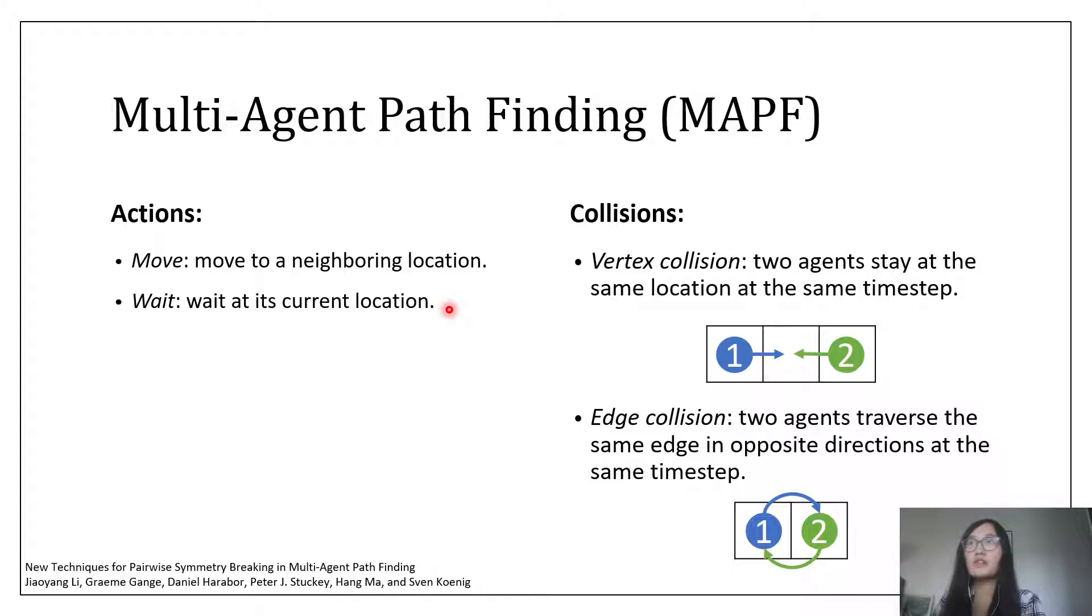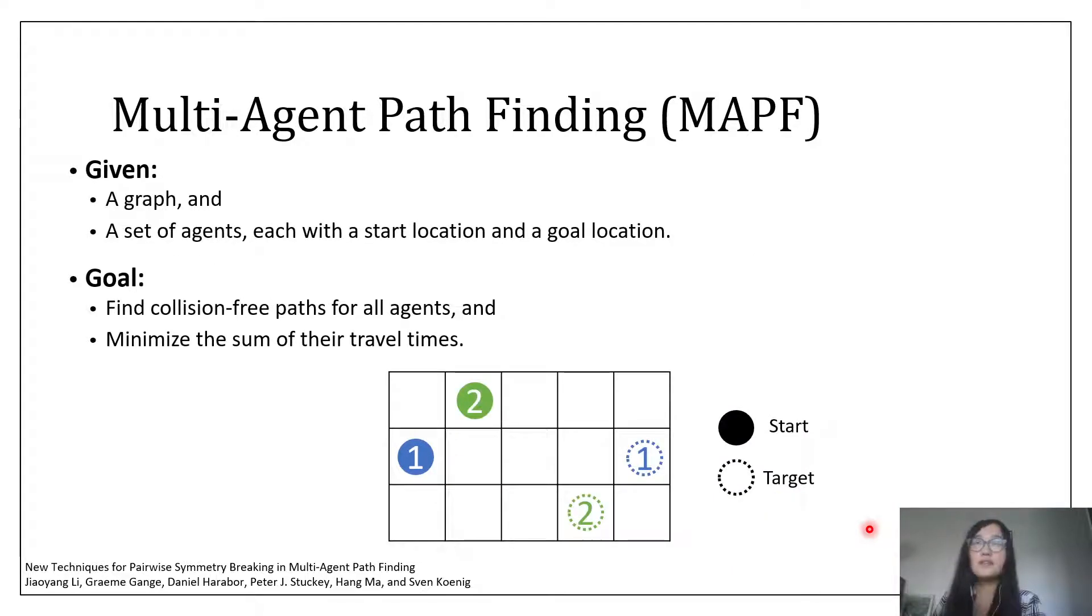We assume there are two types of collisions. The first is vertex collision, which happens when two agents stay at the same location at the same time step. The other is edge collision, which happens when two agents traverse the same edge in opposite directions at the same time step. Our task is to find collision-free paths for all agents and minimize the sum of their travel times.